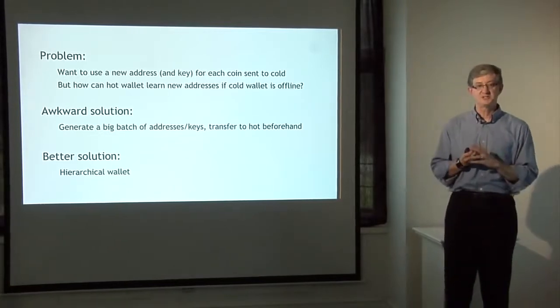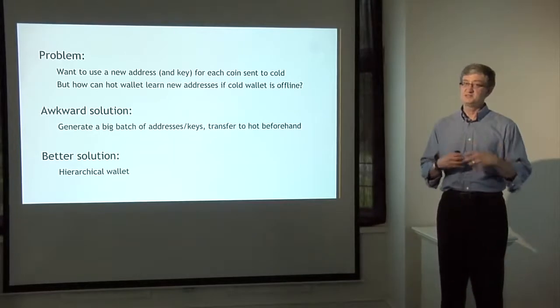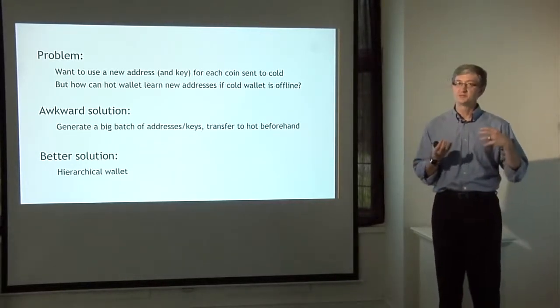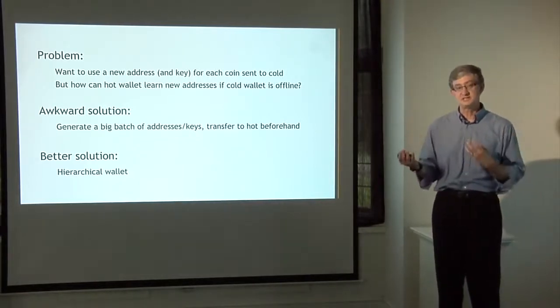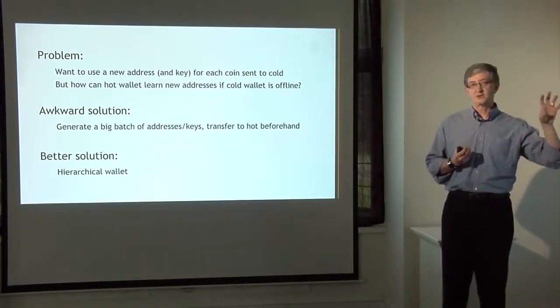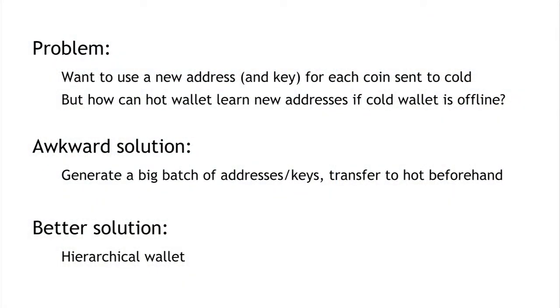There's a problem: how we manage these addresses. For privacy and other reasons, we want to receive each coin at a separate address and manage different secret keys. Whenever we transfer a coin from the hot side to the cold side, we'd like to use a fresh cold address. But because the cold side is not online, we need some way for the hot side to find out about those addresses. One awkward solution is to have the cold side generate a big batch of addresses all at once, transfer those to the hot side, and use them up one by one — but this requires periodically reconnecting the cold side.